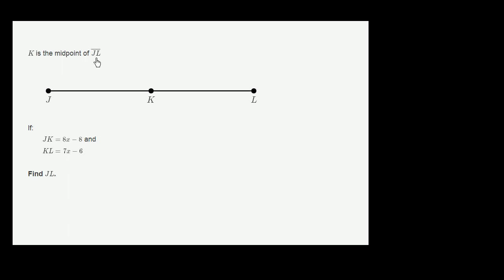We're told that K is the midpoint of segment JL. So that tells us that segment JK is going to be congruent to segment KL, that they're going to be the exact same length.